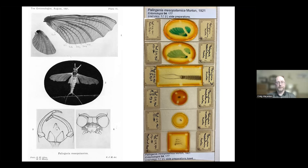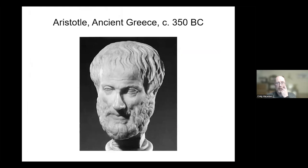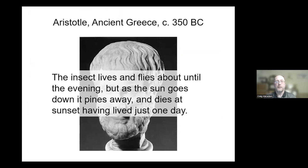That was 2000 BC. Bringing it forward to ancient Greece in 350 BC, Aristotle wrote about an insect that lives and flies about until the evening, but as the sun goes down it pines away and dies at sunset, having lived just one day — again describing the brief adult life of a mayfly.